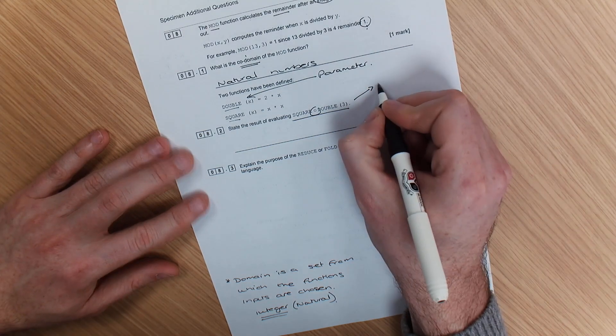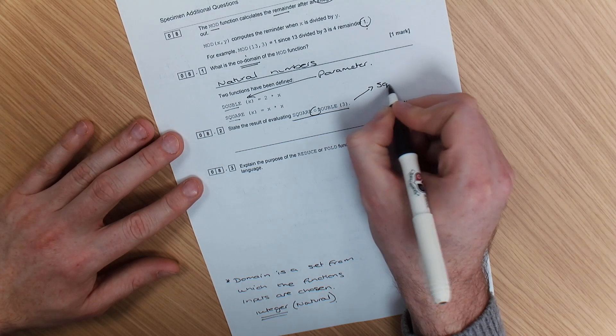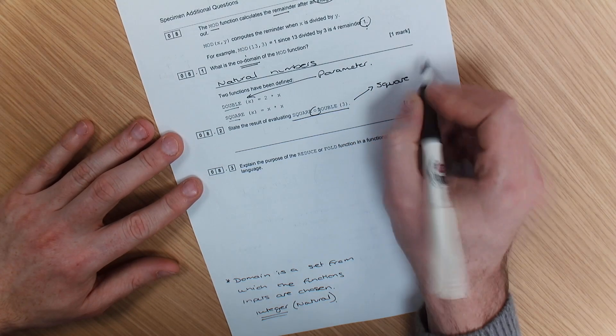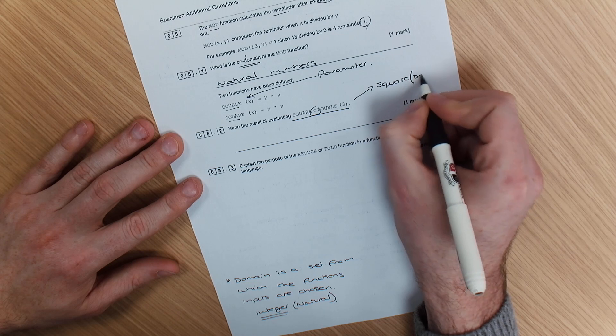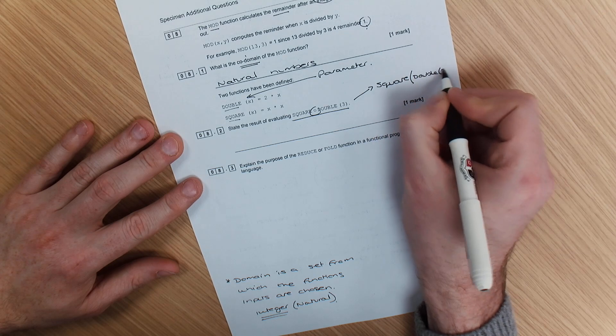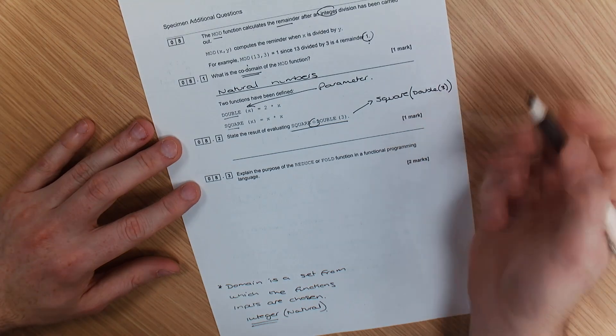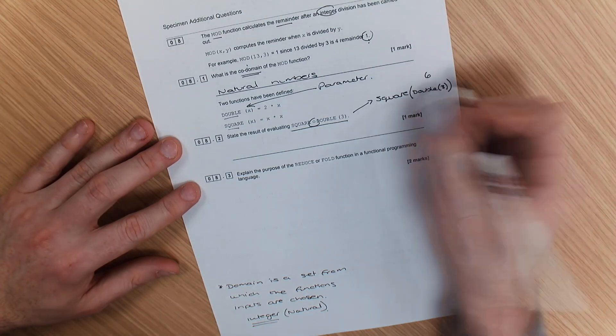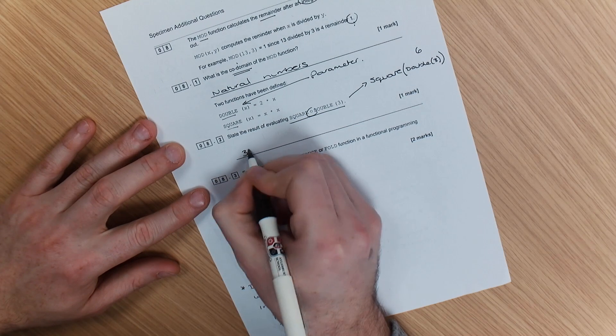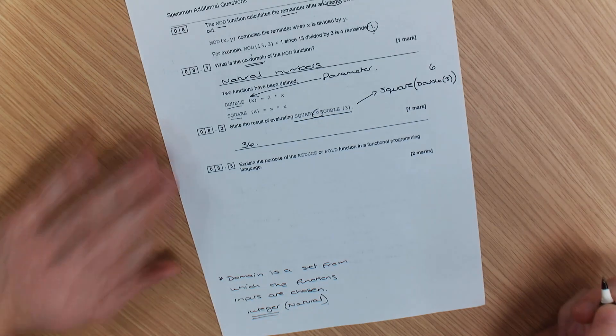So what I've got here, realistically, would look like square, double, three. So that's what it would actually look like. So what's the double of three? Six. What's six squared? Thirty-six would be your answer there.